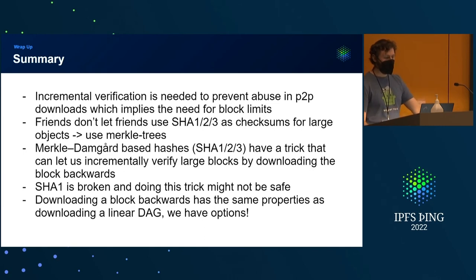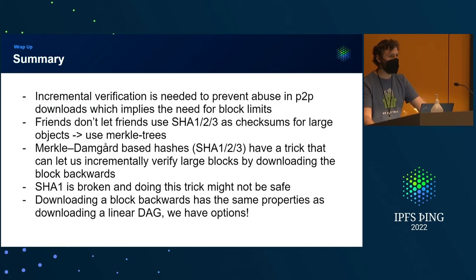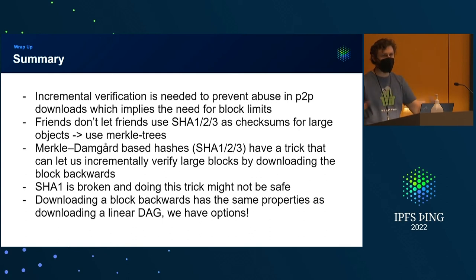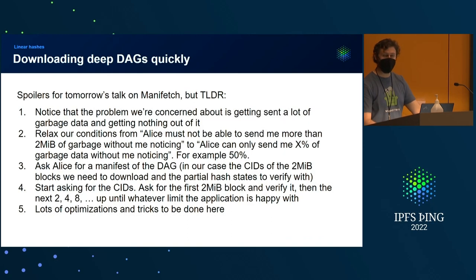Wrap up: incremental verification is needed to prevent abuse, which is why we have block limits. Friends don't let friends use Merkle-Damgård hashes as checksums for large objects — just use a Merkle tree. If you hate Blake-3 and Kangaroo-12, make a new one using the same Merkle tree constructions with whatever security parameters you want. But please stop using Merkle-Damgård for this. The Manifetch thing works, but your life is so much easier if it's already a Merkle tree.